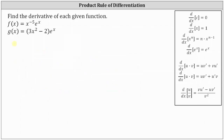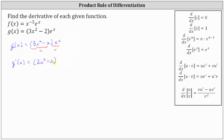Now let's find g prime of x. Notice g of x is a product. For the purpose of our formula, we will let the first function be equal to u and the second function be equal to v. g prime of x is equal to the first function, or u, times the derivative of the second function, or v prime, which is the derivative of e to the x with respect to x, plus the second function, or v, times the derivative of the first function, or u prime, which is the derivative of 3x squared minus 2 with respect to x.